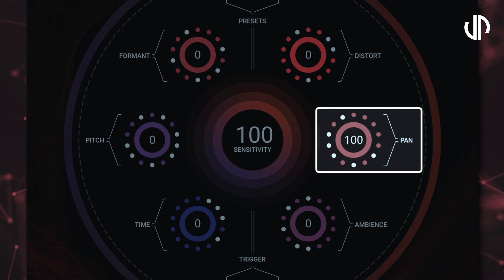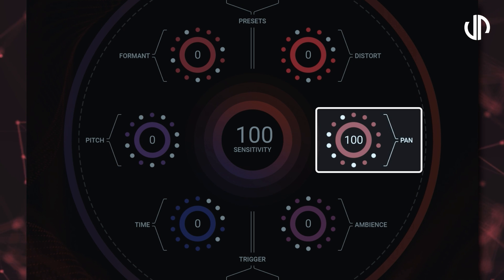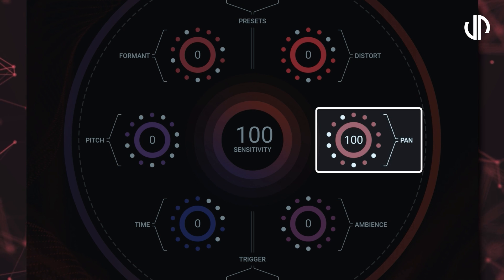Pan controls the randomisation of the sound in the stereo field. Imagine moving the sound around in your headphones or speakers — that's what this does. It spreads the sound out differently, making it feel like it's moving around you.